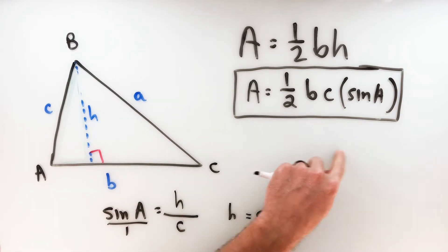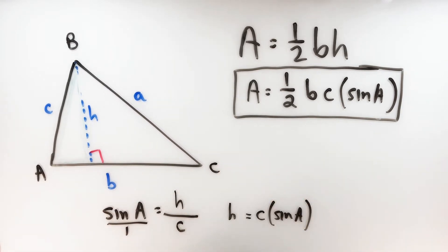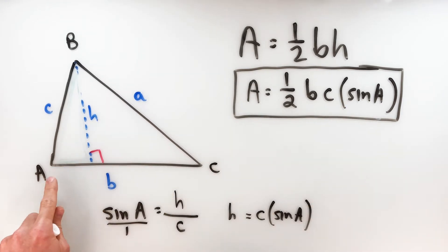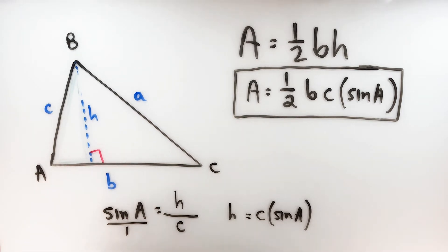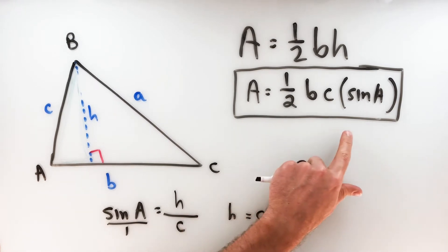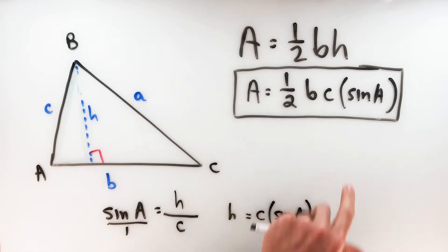This might look a little complicated, but the calculator really does all the heavy lifting here. B and C are two sides of a triangle, and A is the angle in between those two sides. So if I have a situation where I don't necessarily have the base and the height, but I do know the lengths of two sides and the angle between them, I can use this formula to find the area pretty quickly.